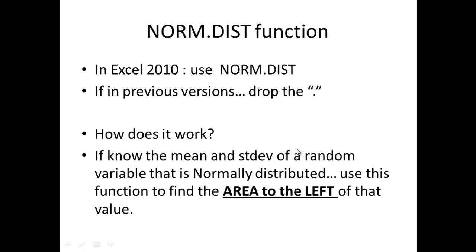The NORM.DIST function in Excel 2010 requires the period. In previous versions like Excel 2007 or earlier, just drop the period and the function works exactly the same way. If you know the mean and standard deviation of a continuous random variable that is normally distributed — usually mentioned in the problem — use this function to find the area to the left of a given value.